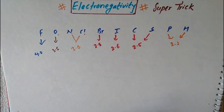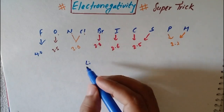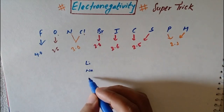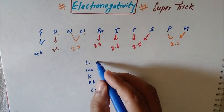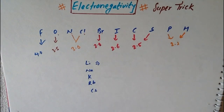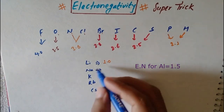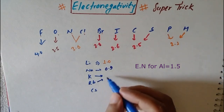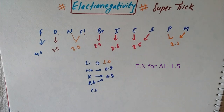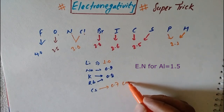For metals — alkali metals: lithium is the first metal, electronegativity is 1.0. Sodium is 0.9. Potassium and rubidium are equal at 0.8. Cesium is at the periodic level with the lowest electronegativity, 0.7. The minimum electronegativity is Cs at approximately 0.7.